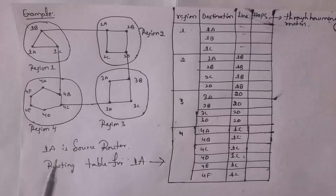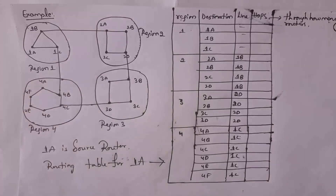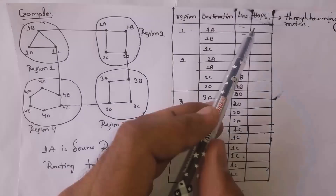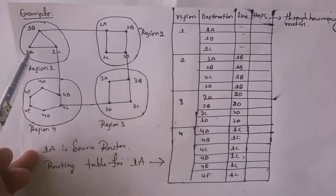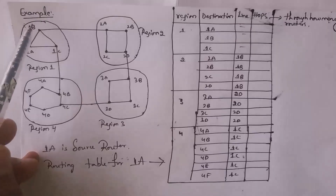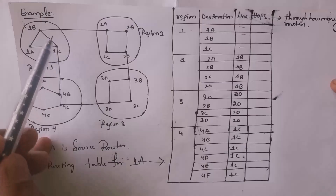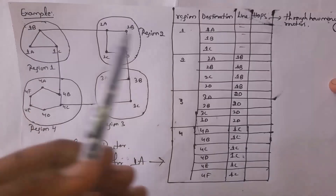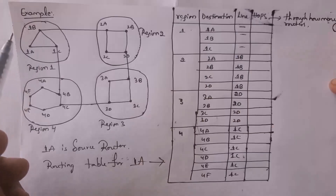Let's say the source router is 1A. We will create a routing table for router 1A, finding the shortest distance to all other routers in the network. The 'line' column indicates through which gateway router data needs to pass. For routers within region 1 — 1B and 1C — router 1A can communicate directly with no gateway router needed, since they all belong to the same region.